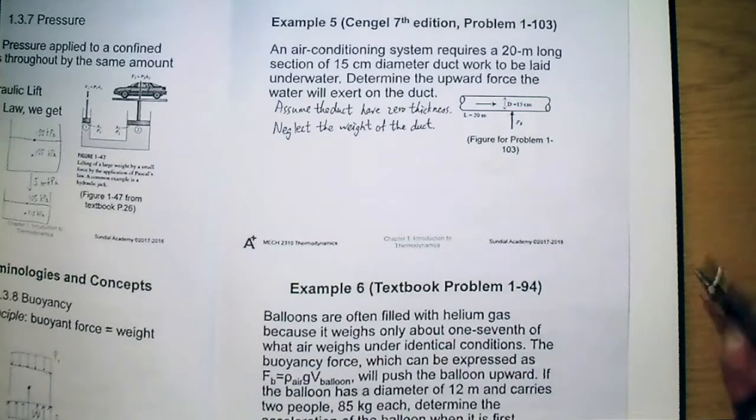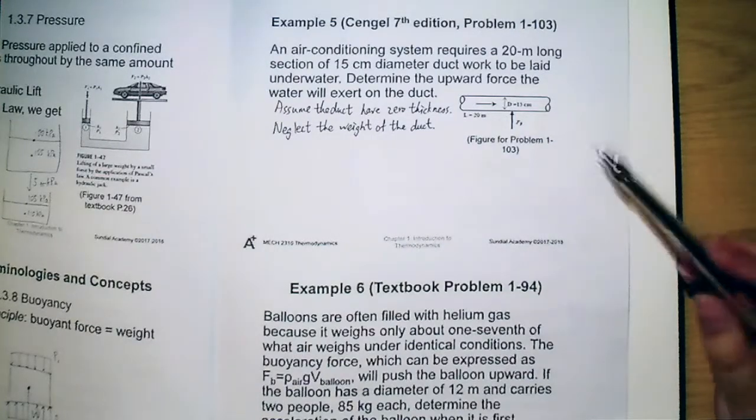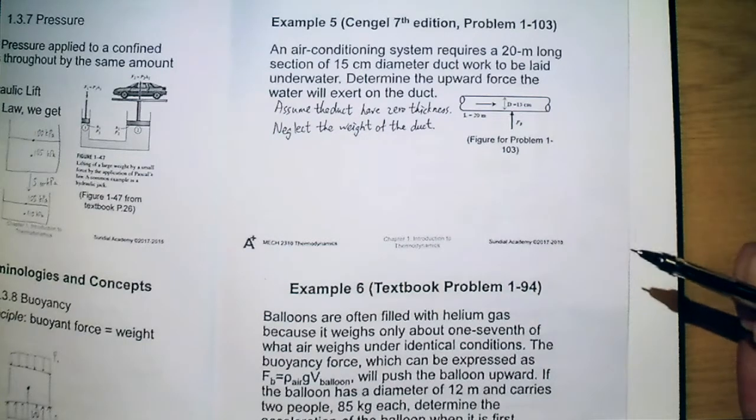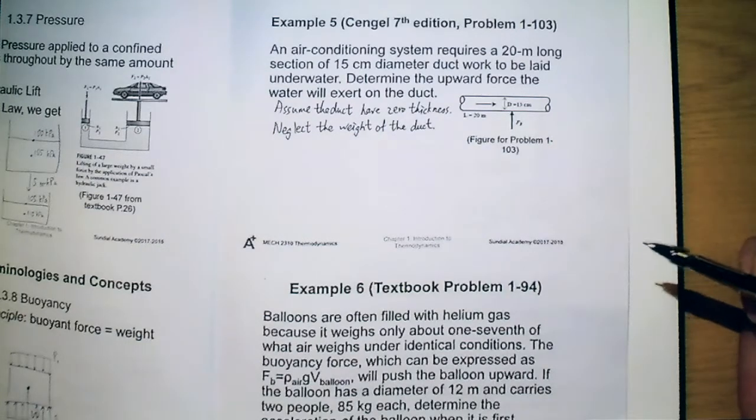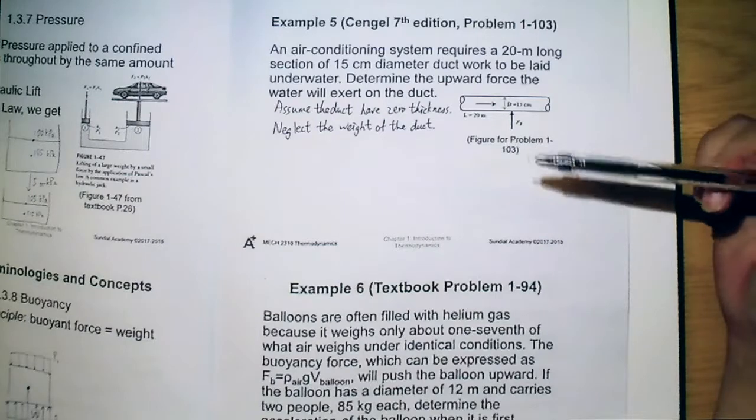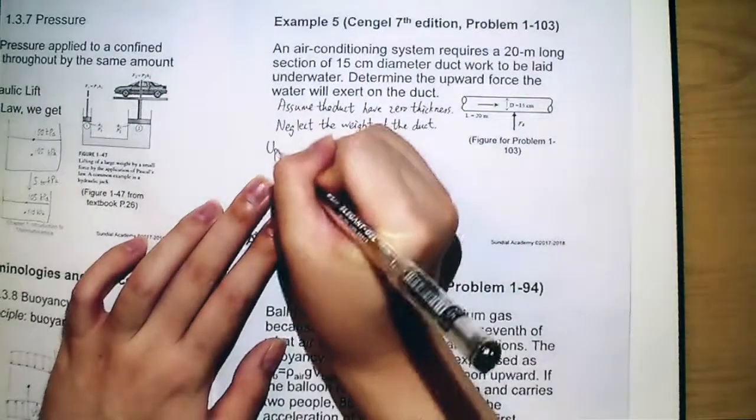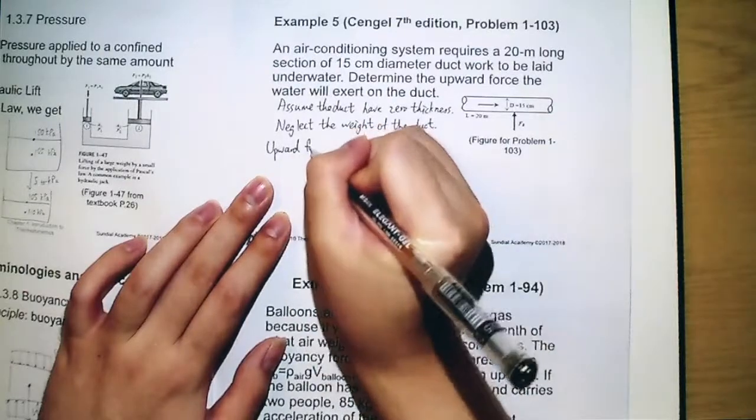So in this case, why do we neglect the weight of the duct? Because actually we know that the weight of the duct will also contribute to some of the buoyant force, but we will just consider the part that is occupied by the air. So that's the upward force, which is just the buoyant force.